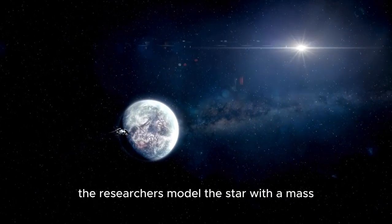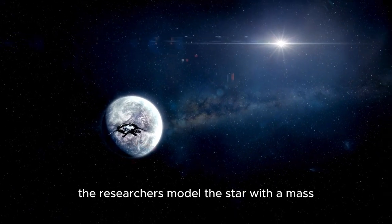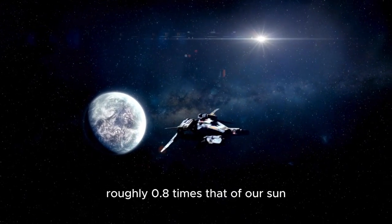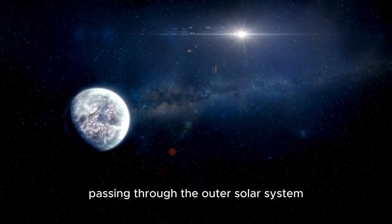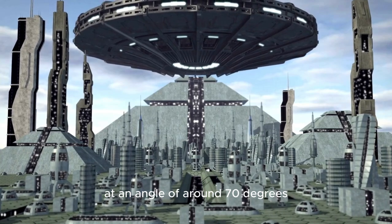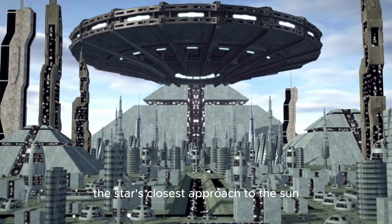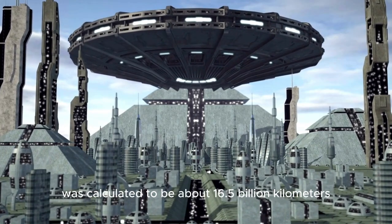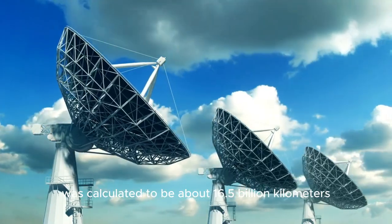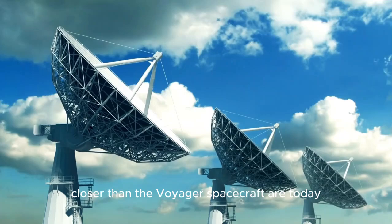In their simulations, the researchers modeled a star with a mass roughly 0.8 times that of our sun, passing through the outer solar system at an angle of around 70 degrees relative to the plane of the planets. The star's closest approach to the sun was calculated to be about 16.5 billion kilometers, closer than the Voyager spacecraft are today.